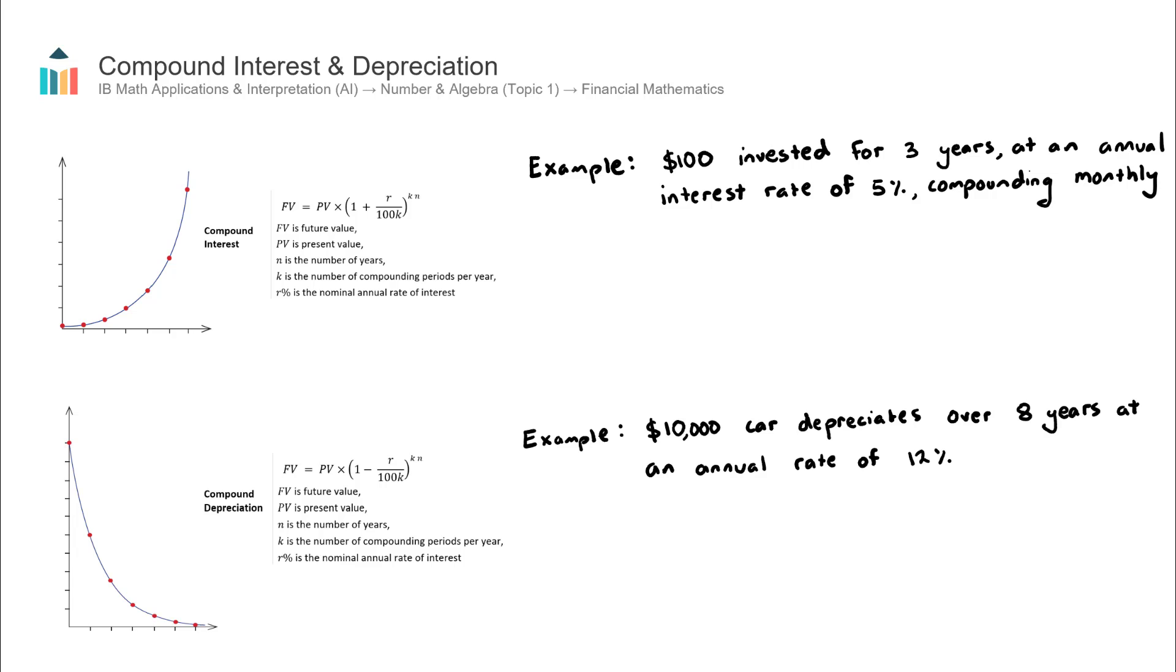I think the best way to learn these concepts is to practice a couple of examples. Let's go through the examples that I have here on the right-hand side. This first example involving compound interest: $100 is invested for three years at an annual interest rate of 5% compounded monthly, and we want to find out how much the investment is worth at the end of three years.